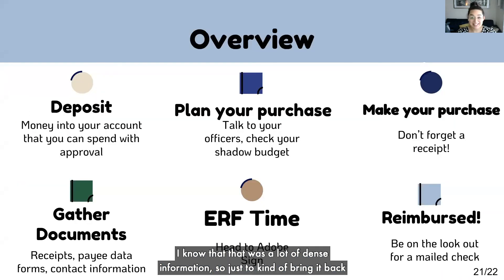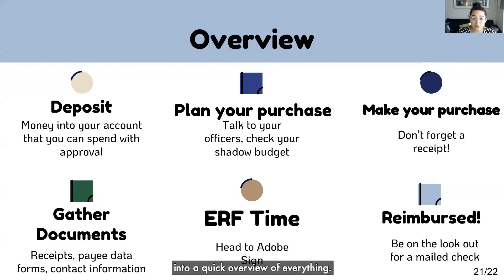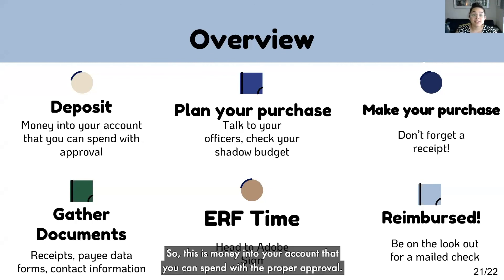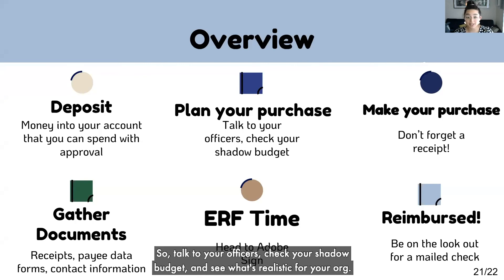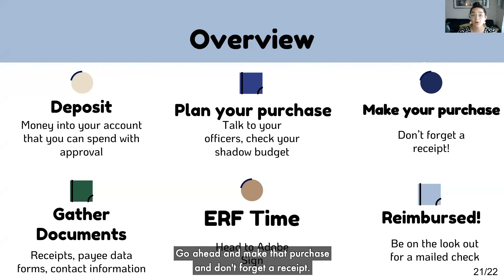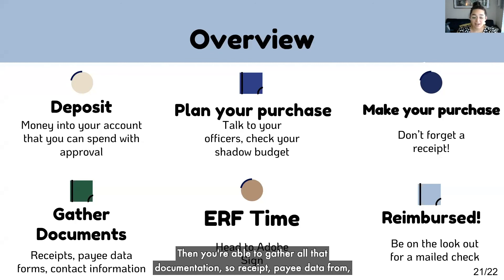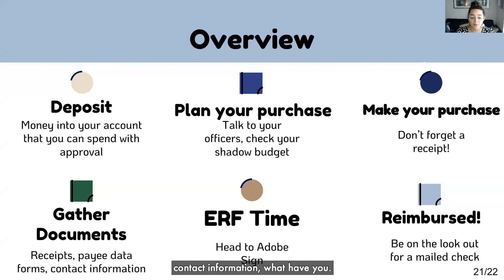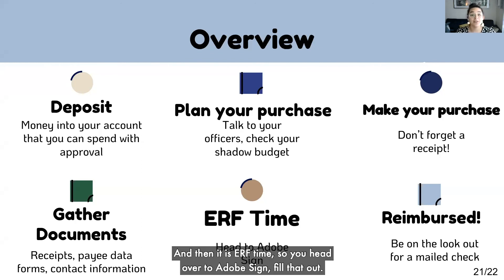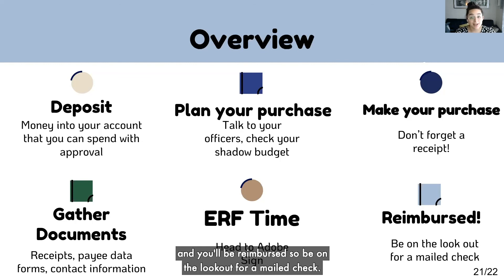That was a lot of dense information, so to do a quick overview: you start off by depositing money into your account that you can spend with proper approval. Then you plan your purchase — talk to your officers, check your shadow budget, and see what's realistic for your org. Go ahead and make that purchase, and don't forget a receipt. Then gather all the documentation — receipt, payee data form, contact information, what have you. Then it's ERF time: head over to Adobe Sign, fill that out, and once everything is reviewed and approved, you'll be reimbursed. Be on the lookout for a mailed check.